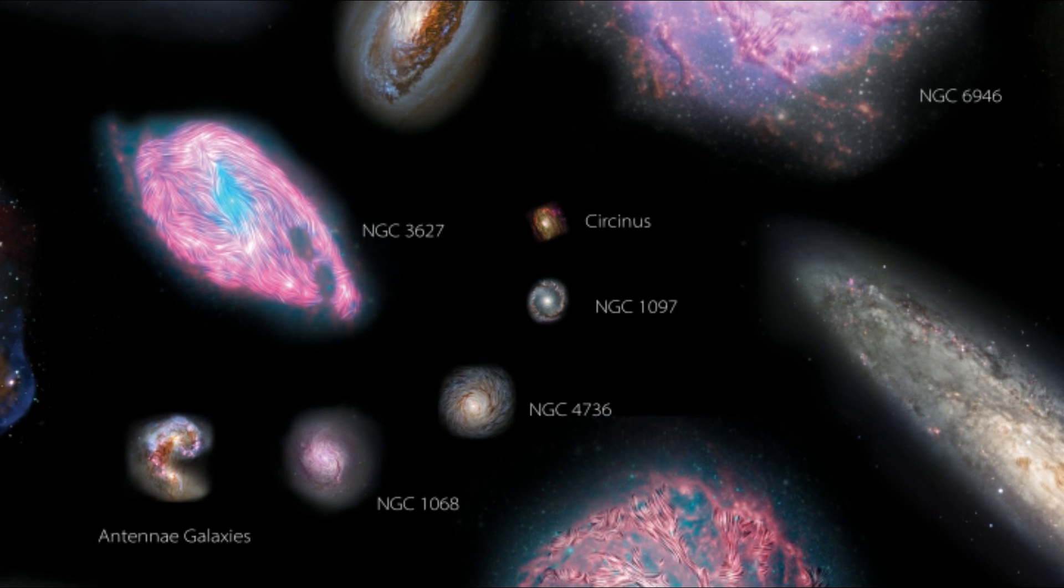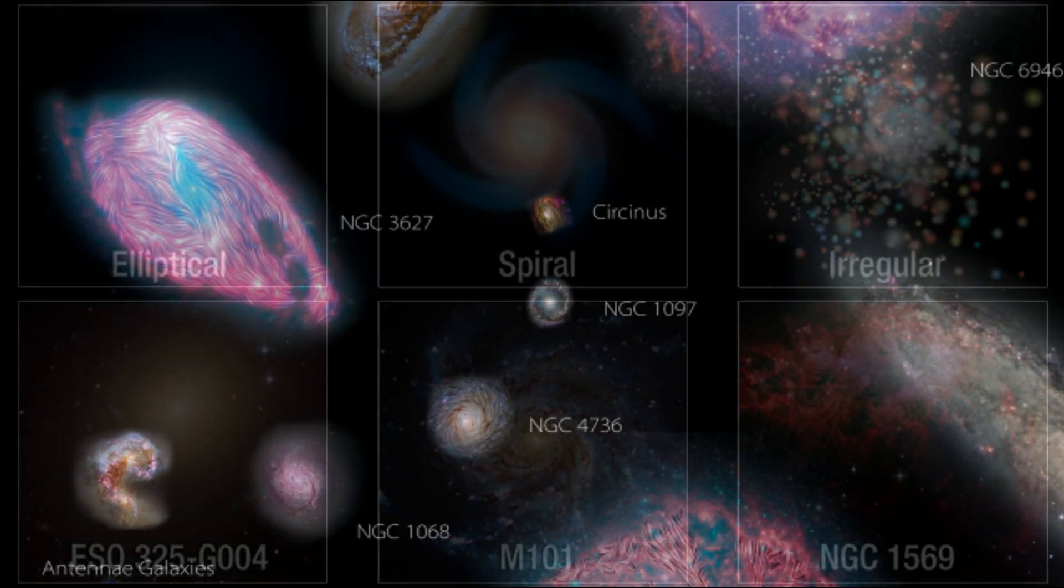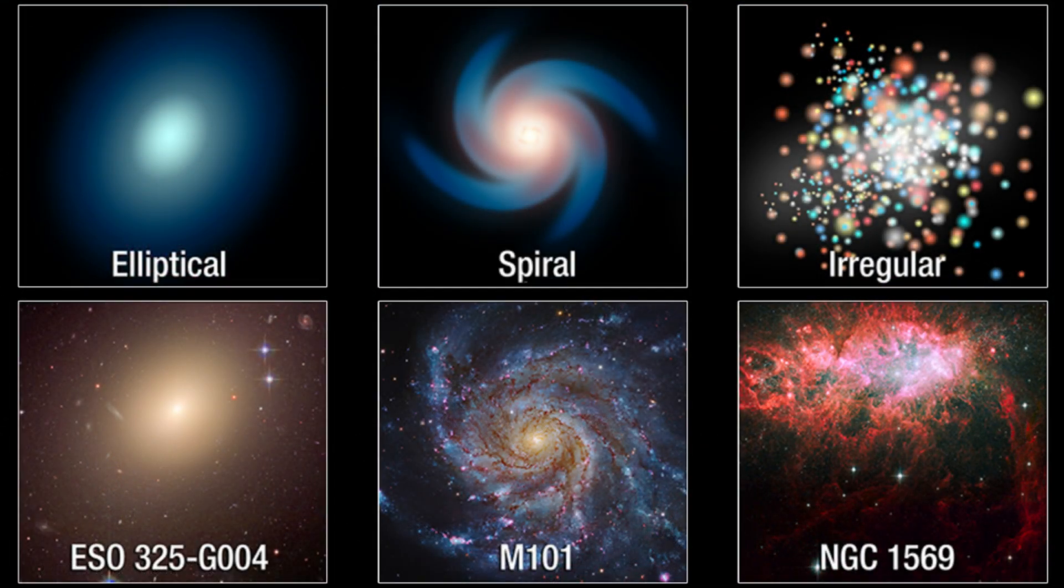Galaxies can be categorized into several types, including spiral, elliptical, and irregular galaxies.